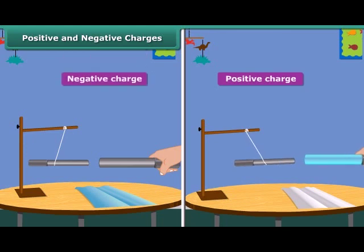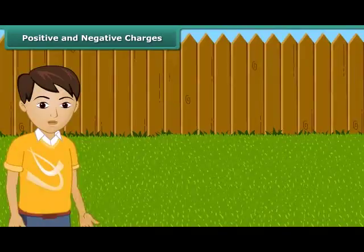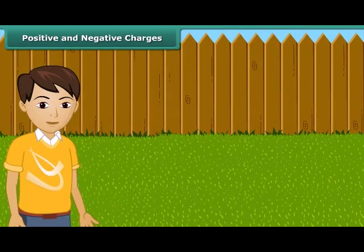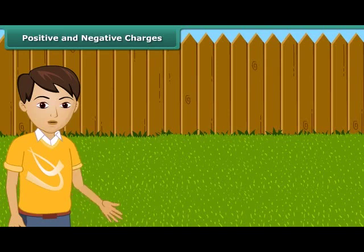The charges produced in the ebonite and the glass are different in nature. These two kinds of charges are called positive and negative charges. The positive charge is shown by the plus sign and the negative by the minus sign. Merely as a convention, charge on a glass rod rubbed with silk is taken as positive, and that of an ebonite rod rubbed with woolen cloth is taken as negative. From the earlier activity, we can conclude that like charges repel each other and unlike charges attract each other.